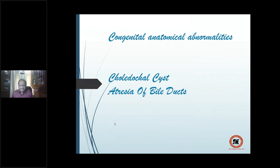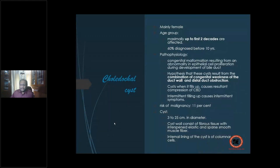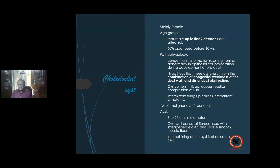Two important congenital anatomical abnormalities: choledochal cyst and biliary atresia. A choledochal cyst is a congenital malformation where, combined with distal duct obstruction, weakness of the duct wall leads to cyst formation. This bi-pronged mechanism affects the extra-hepatic biliary channel — and in a small percentage, the intra-hepatic channel. When cysts fill up, they cause compression of the CBD and intermittent symptomatology.